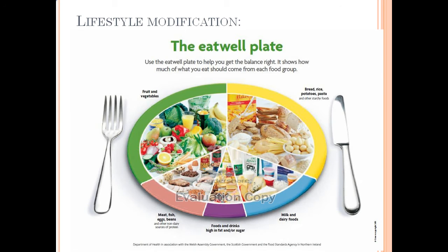The number one step in lifestyle modification is a healthy diet. You need to know that you need to eat well, eat the right balance, and not just stop eating food altogether. There is the concept of the eat well plate, whereby your doctor will advise you on how to adjust this plate depending on your situation. The basic concept is that almost half of this plate should constitute fruits and vegetables, either raw or cooked. You could have a portion constituting bread, rice, potatoes, and pasta, a very small portion constituting fats, and a small portion again constituting proteins, milk, and dairy.